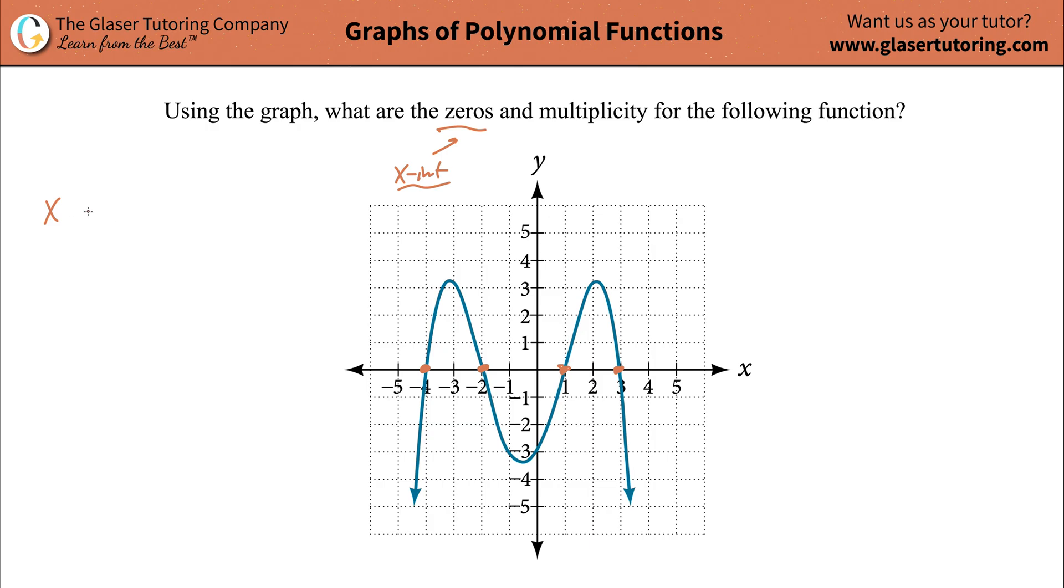So you write those down. Those are the zeros. So x is going to be equal to negative 4. The x will then equal negative 2. The x will then be equal to 1. And the x will then be equal to 3. These values are known as the zeros.